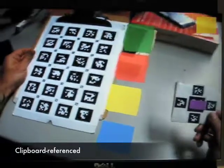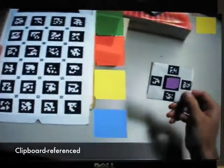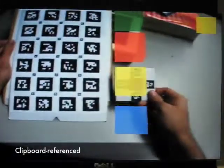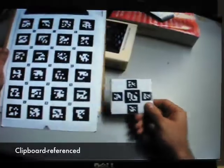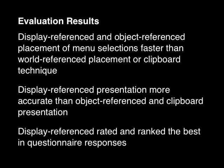Our study shows that display-referenced and object-referenced placement of menu selections were faster than world-referenced placement or a clipboard technique. In addition, display-referenced presentation was more accurate than object-referenced and clipboard presentation and was rated and ranked the best in questionnaire responses.